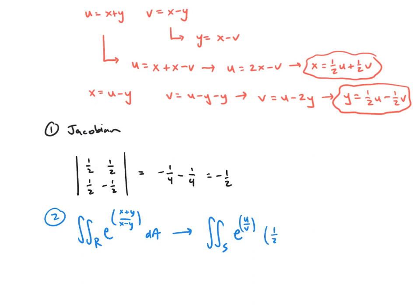Double integral over S of e^(u/v) multiplied by the absolute value of the Jacobian. And similar to the last example, we're going to integrate in the order of du dv, because that is much easier to handle.